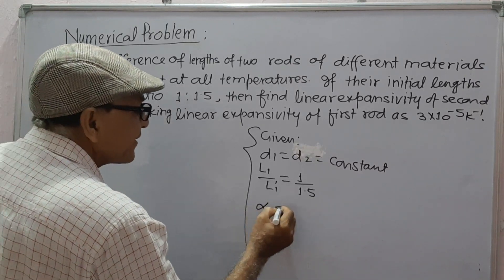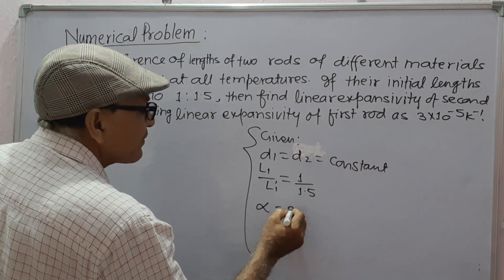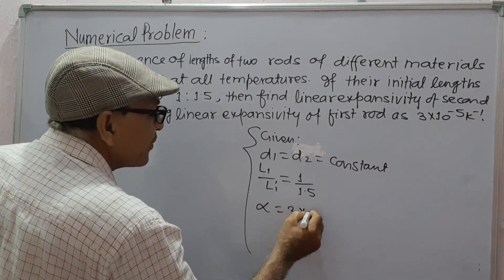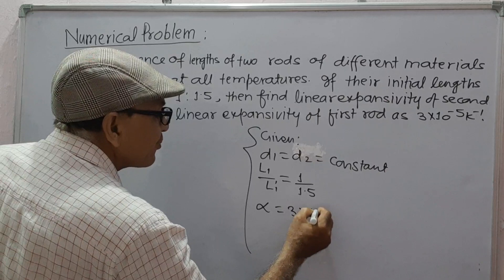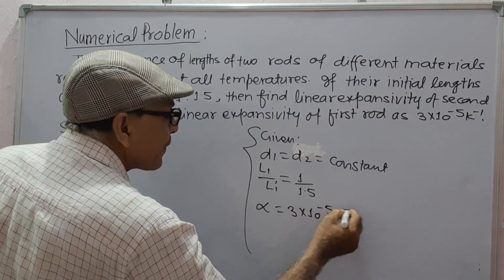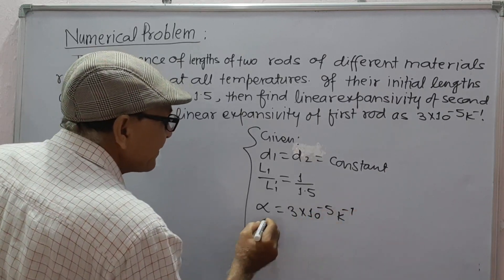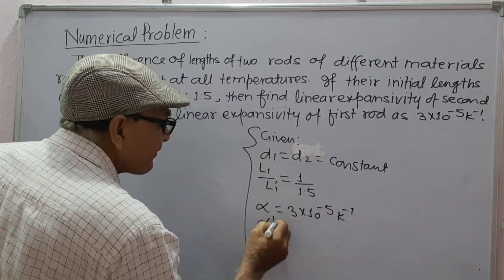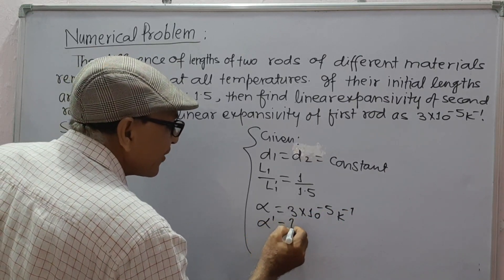Here, alpha is equal to 3 into 10 to the power minus 5 per Kelvin. We need to find alpha dash, that is, the linear expansivity of the second rod.